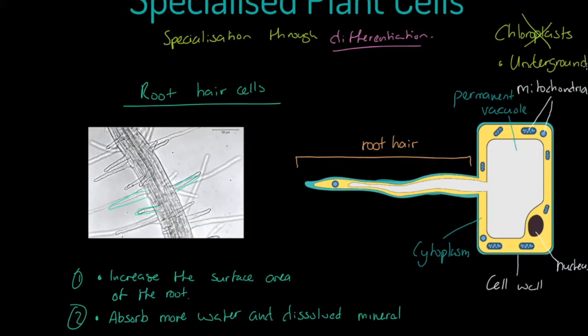If you consider that chloroplasts are the site of photosynthesis, then because there is no sunlight penetrating underground, certainly unless it's a very shallow level, chloroplasts are kind of irrelevant to this root hair cell.